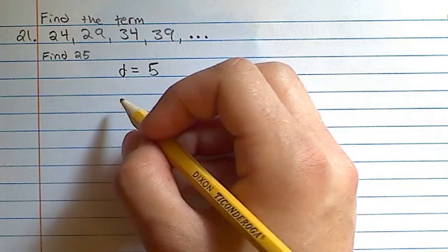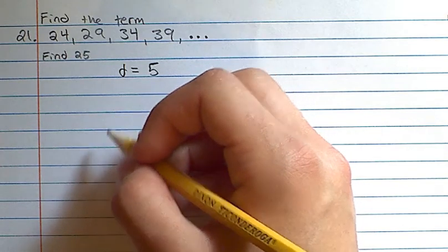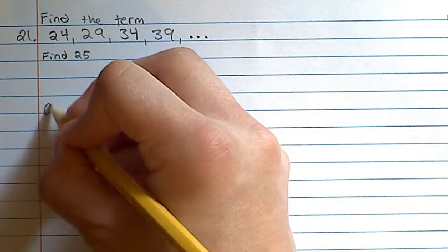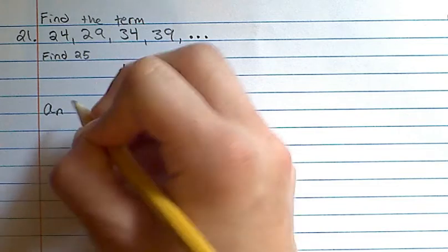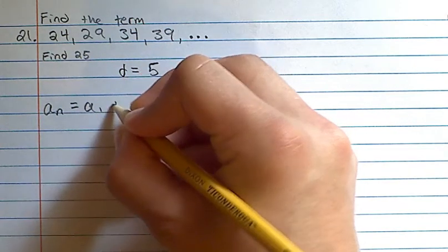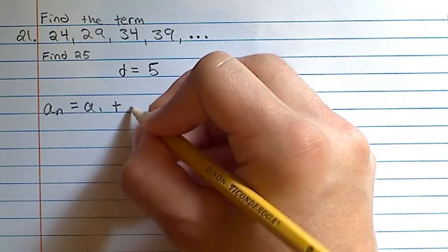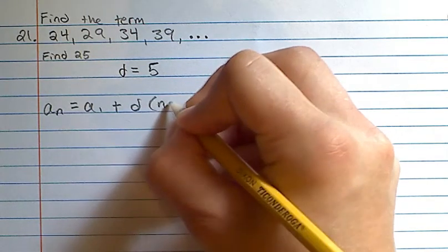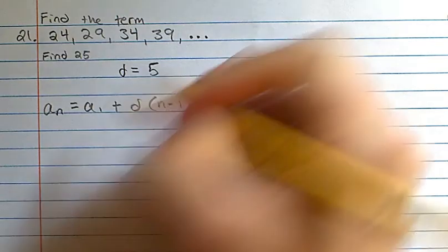Now knowing this, we can find our explicit formula, which is an is equal to a1 plus d times n minus 1. So in this case,